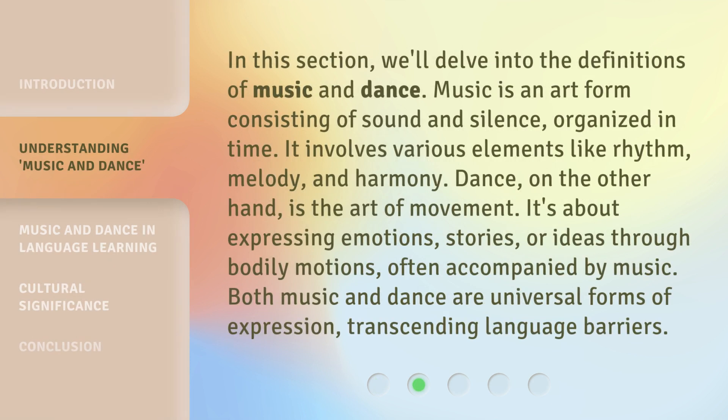In this section, we'll delve into the definitions of music and dance. Music is an art form consisting of sound and silence, organized in time. It involves various elements like rhythm, melody, and harmony. Dance, on the other hand, is the art of movement — it's about expressing emotions, stories, or ideas through bodily motions, often accompanied by music. Both music and dance are universal forms of expression, transcending language barriers.